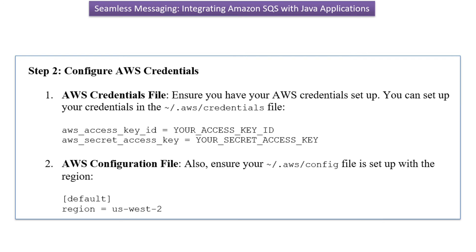Step two is to configure AWS credentials. I have created a separate video on how to set up AWS credentials — check the link in the video description. The first file is the AWS credentials file — make sure the AWS access key ID and AWS secret access key are correct. The second is the AWS configuration file — make sure the region is set properly.